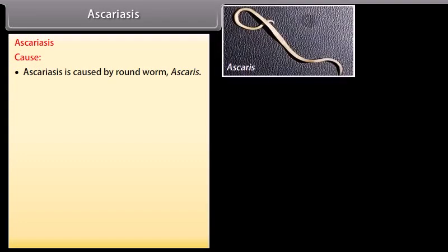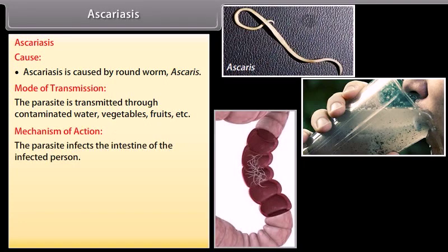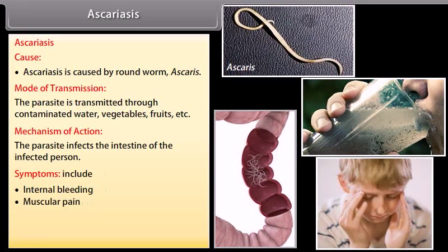Ascariasis is caused by the roundworm Ascaris. The parasite is transmitted through contaminated water, vegetables, fruits, etc. It infects the intestine of the infected person. Symptoms include internal bleeding, muscular pain, fever, anaemia, and blockage of intestinal passage.